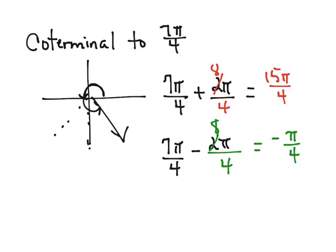And again, your answers may vary, but those are two angles that are coterminal to 7 pi over 4 in radians.